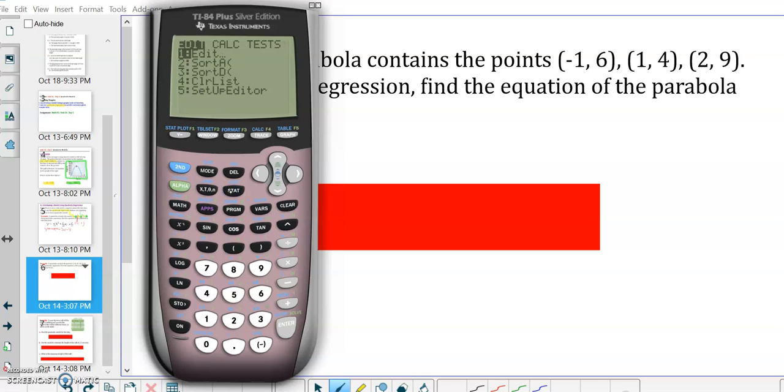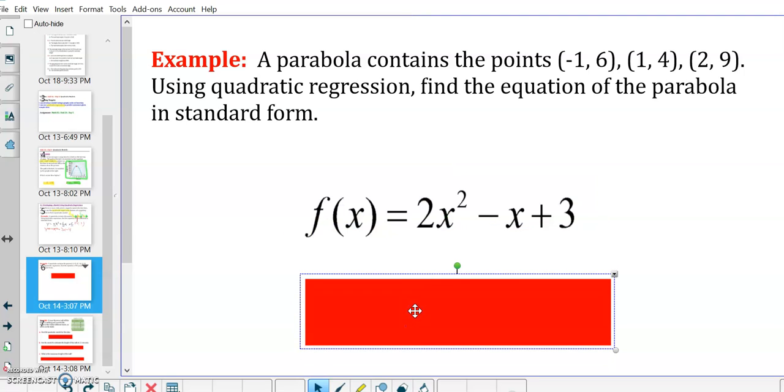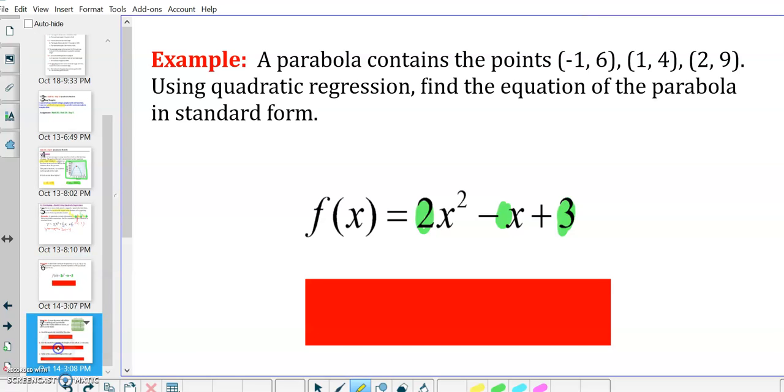Then we go stat, over to calc, option five. If you don't want to scroll down to five, you can just press five on the keyboard, and it'll get there for you. And we have two, negative one, and three. Sure enough, those are our coefficients. Two, that's technically a negative one, and then three.